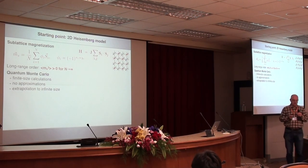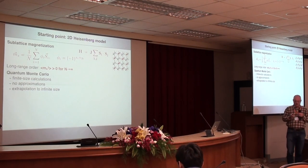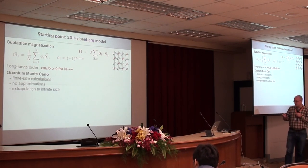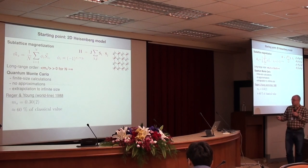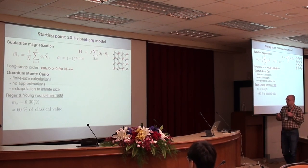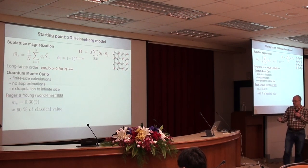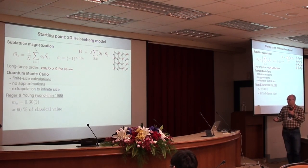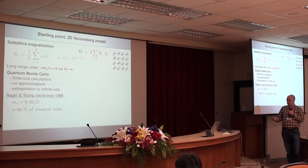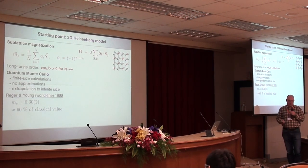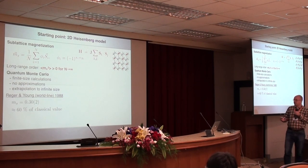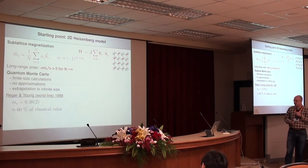Okay, so in this particular model, this is very well known, so I just wanted to talk about it as an introduction. It was first convincingly shown by Reger and Peter Young using world-line quantum Monte Carlo simulations that there is a sublattice magnetization of the system, and it's 60% of the classical value, if you think of the classical value as what you get if you have vectors of length one-half here.